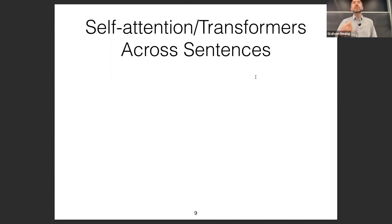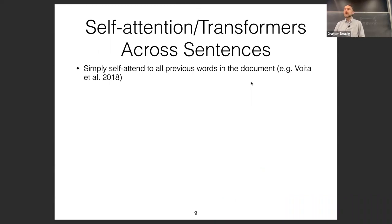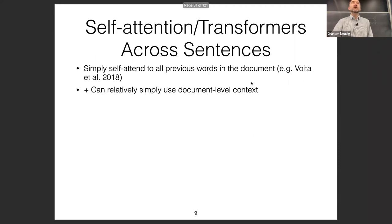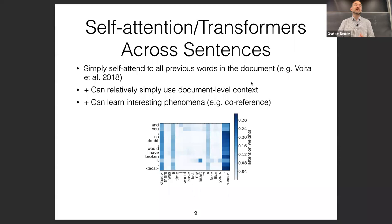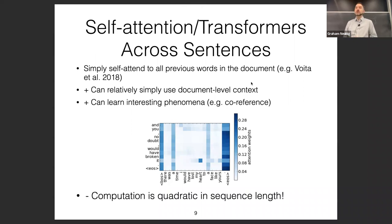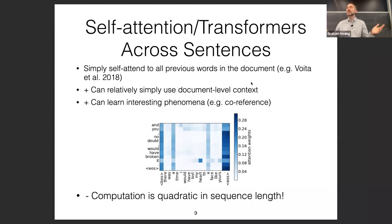Though we don't use RNNs much anymore, the concepts remain useful when thinking about self-attention and transformers across sentences. The easiest way to apply a transformer across many sentences is to self-attend to all previous words in the document. A 2018 paper by Voita et al. was among the first to do this and found the model could learn to attend to the appropriate antecedents of particular words. However, a big issue with applying transformers is that computation and memory become quadratic in sequence length.